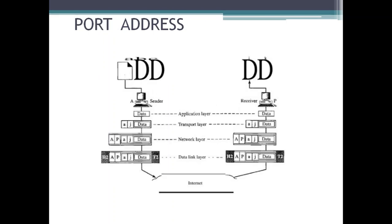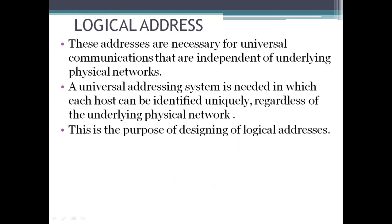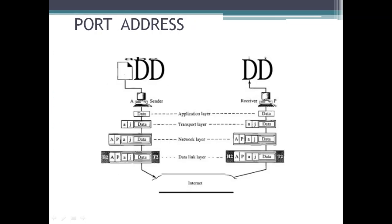Now we move to the third type: port address. IP addresses and physical addresses are necessary for data to travel from source to destination host, but arrival at the host is not the final objective. Today computers can run multiple processes at the same time. The end objective of internet communication is one process communicating with another process. For example, PC-A can communicate with PC-C using Telnet while simultaneously communicating with PC-B using the file transfer protocol. To label these different processes, TCP/IP uses a port address, which is 16 bits in length.